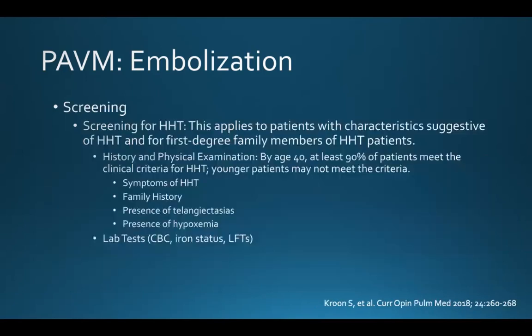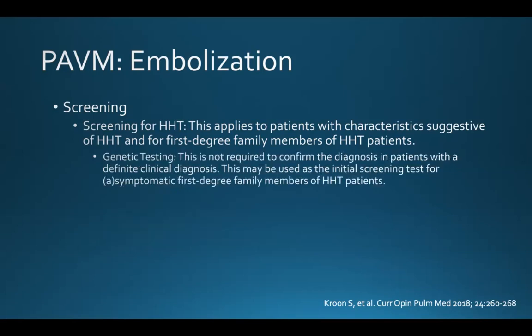We screen patients for HHT who have characteristics suggestive of the disorder. By age 40, at least 90% of patients will meet the clinical criteria for HHT, and it's important to know younger patients may not meet the criteria. Screening includes symptoms of HHT, family history, presence of telangiectasias, and presence of hypoxemia. We also look at lab tests such as a CBC, LFTs, and iron status. Genetic testing is not required to confirm the diagnosis in patients with a definite clinical diagnosis, but may be used as the initial screening test for symptomatic or asymptomatic first-degree family members.